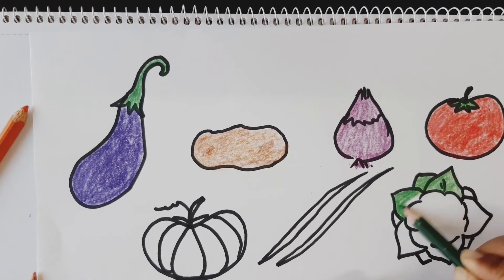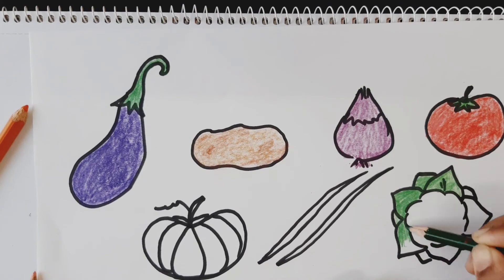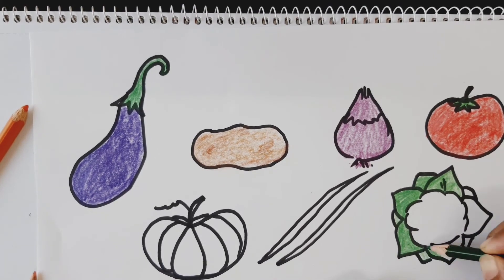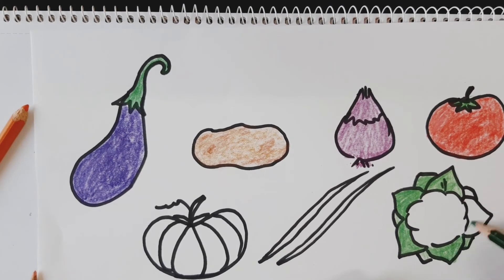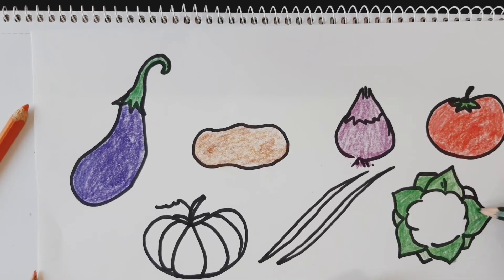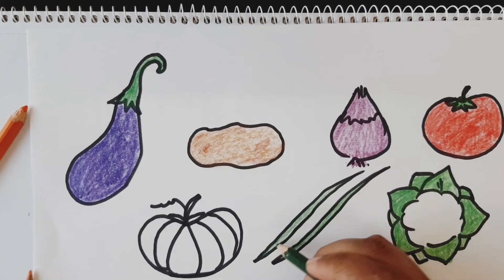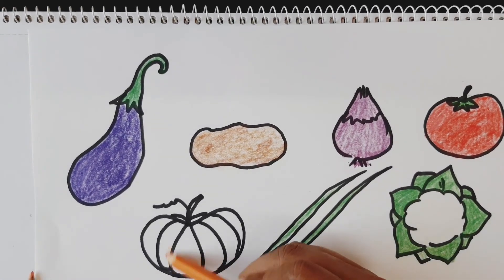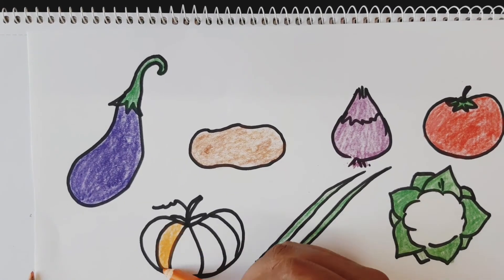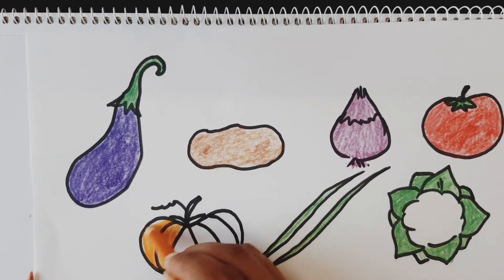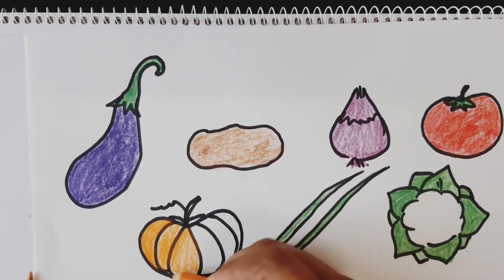The leaf of the cauliflower, and inside we will remain it as the same, not coloring. And finally pumpkin. So our vegetables are ready.